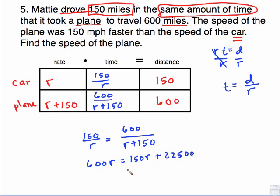Solve that equation. Subtract 150 R from both sides gives this 450 R equals 22,500. Divide both sides by 450, and R is 50 miles per hour. Now, it says find the speed of the plane. We found out R. Our R was the rate for the car. We need to take that 50 and plug it in right there, add that together, and the speed of the plane will be 200 miles per hour.